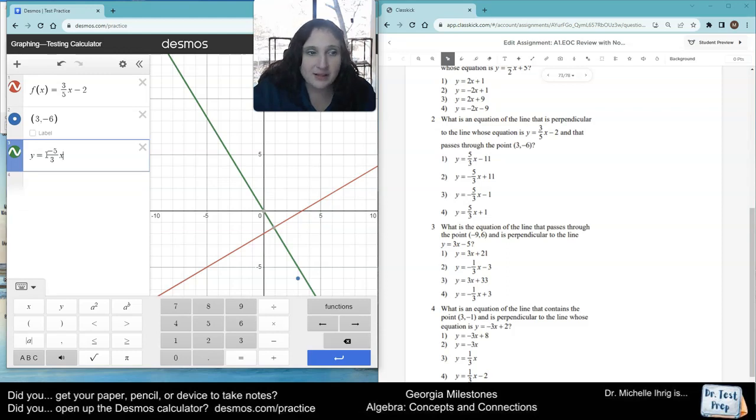And then I am going to do plus 11. Well, that is perpendicular, but it doesn't go through the blue dot. So, now I'm going to do negative five-thirds x minus one. Perpendicular, right angles, through the blue dot, answer.